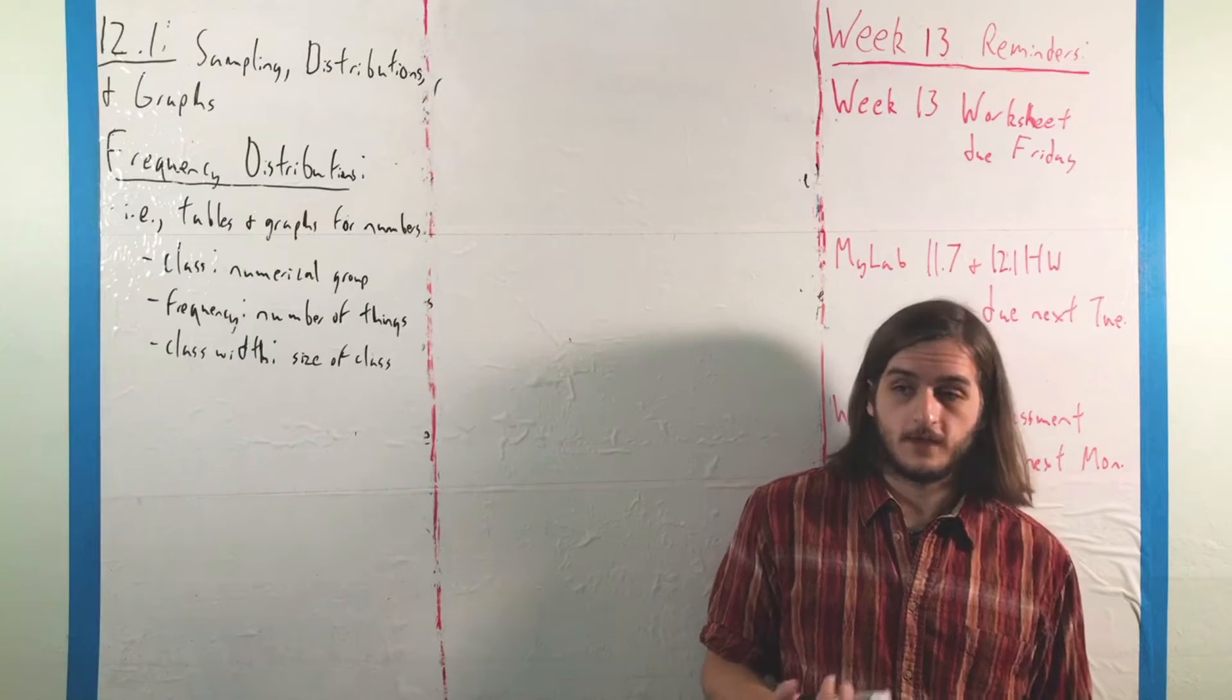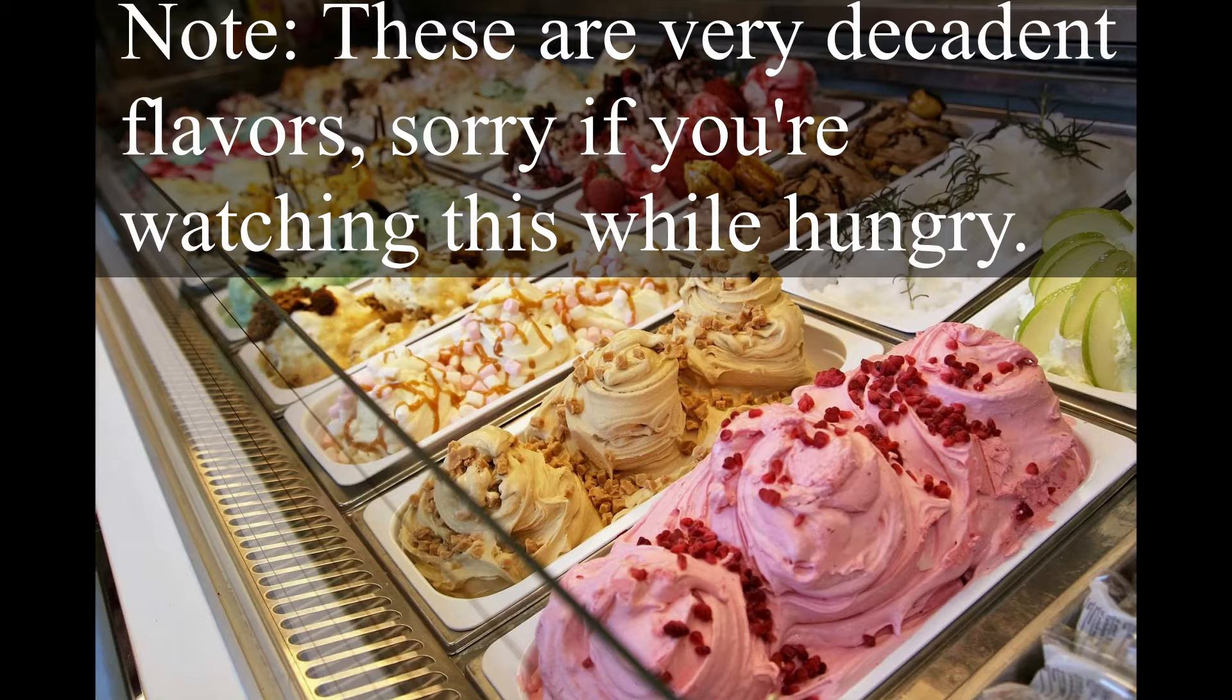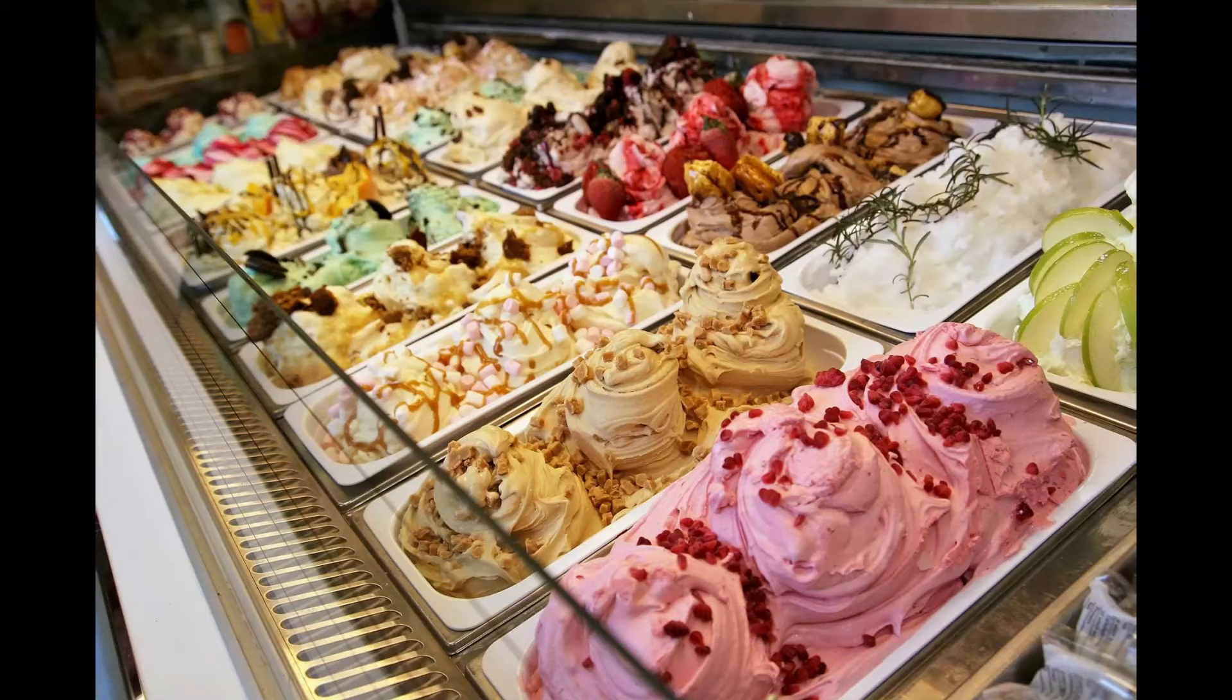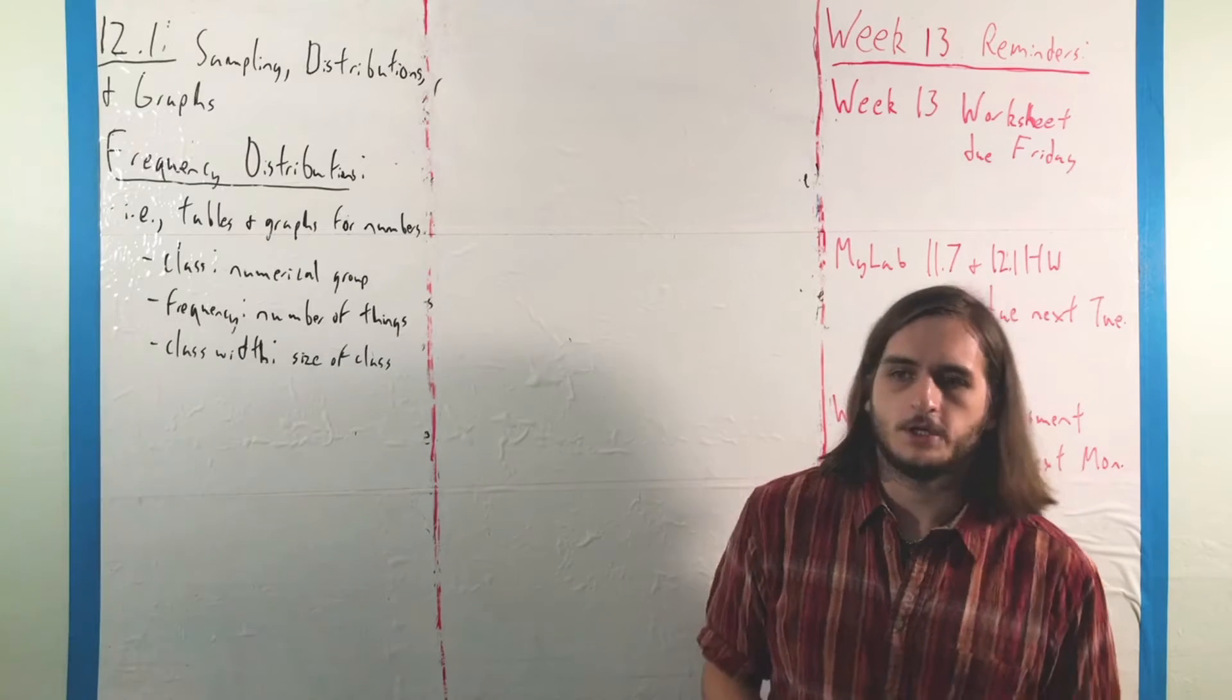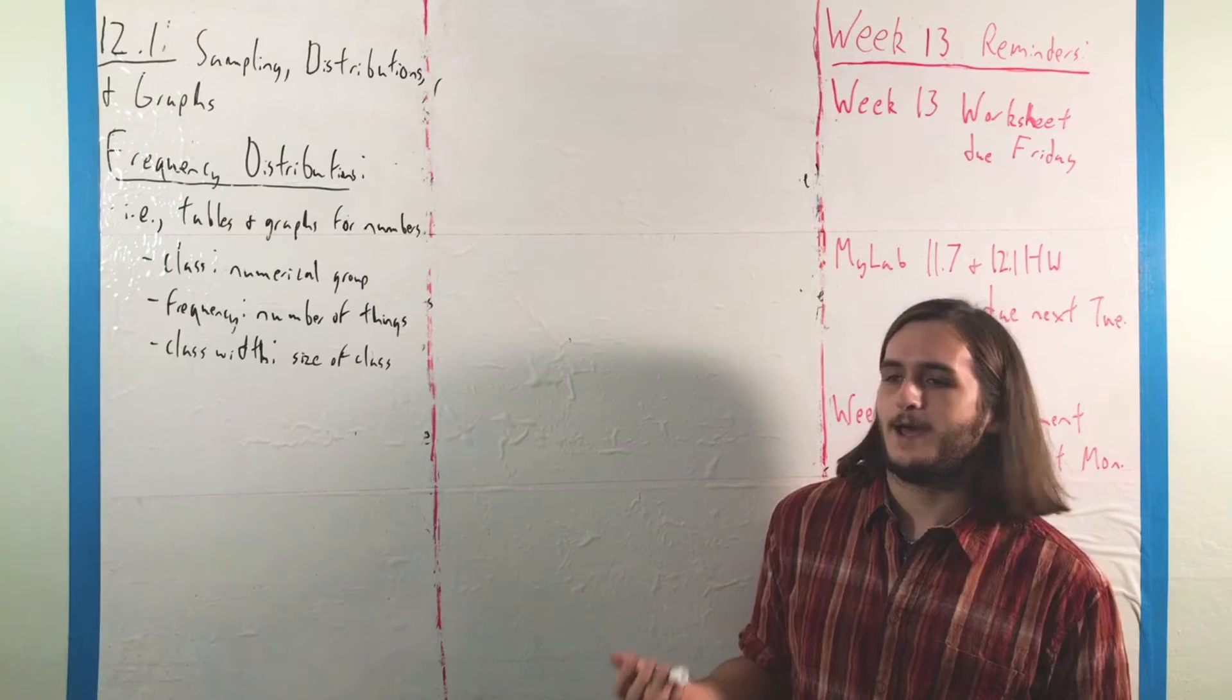Because flavors of ice cream have natural categories that they fall into, Rocky Road or Neapolitan or Mint Chocolate Chip or whatever of the 32 flavors that the ice cream shop you happen to go to has.